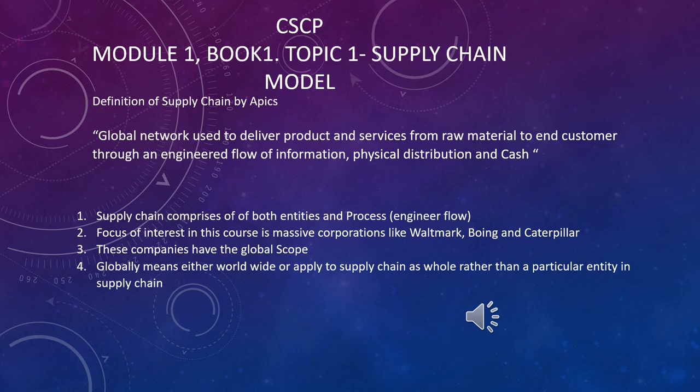The APICS scope is a global one — it's not looking at the local level. The focus is on the global supply chain. Companies like Walmart, Boeing, and Caterpillar are examples that have a global scope.